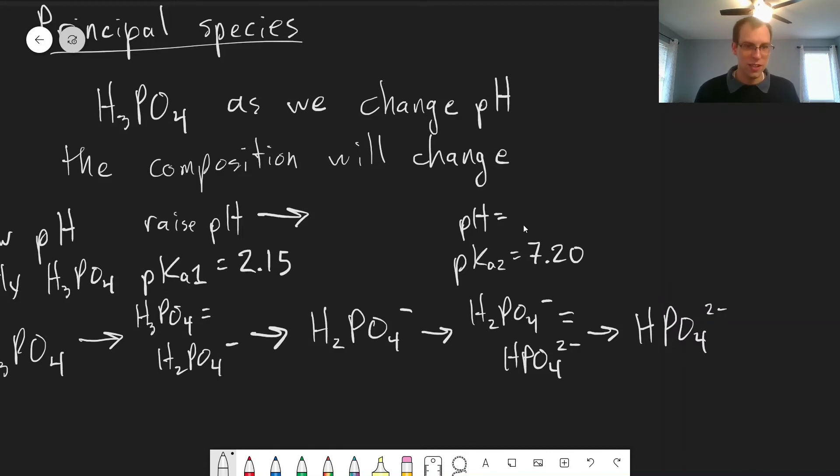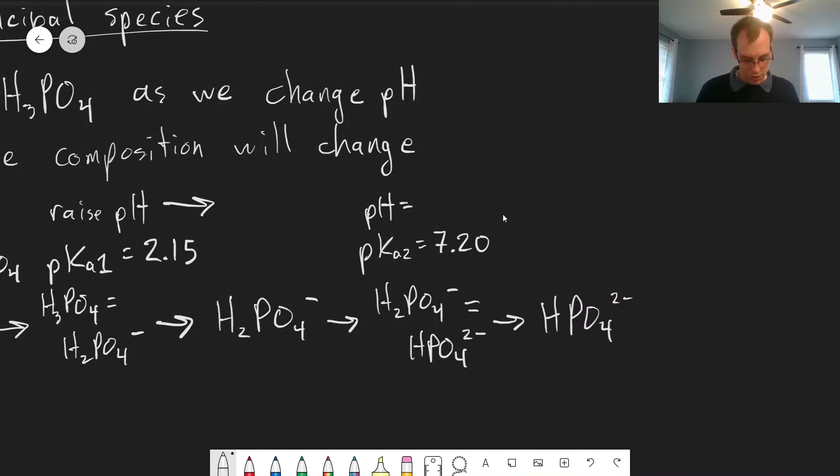But we'll have yet another transition as we keep increasing the pH, where these will be equal, the concentration of HPO4 2 minus will be equal to the concentration of PO4 3 minus, the phosphate. And this is where pH equals pKa3, which is 12.38.